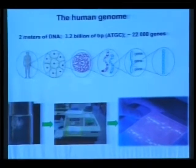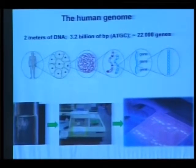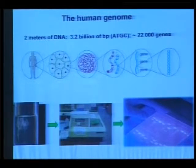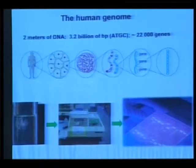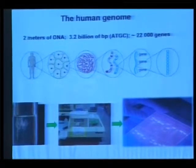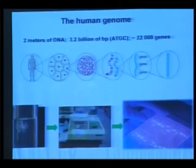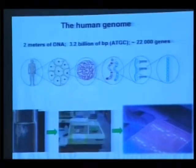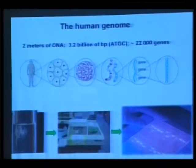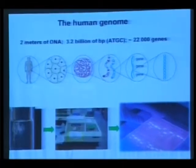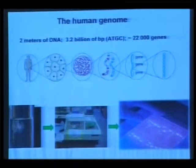The good news is that when we sequenced the genome, we found it was not 100,000 genes but something like 22,000 genes. The bad news is that between the genes there is also information which is very important. So it's really complex.